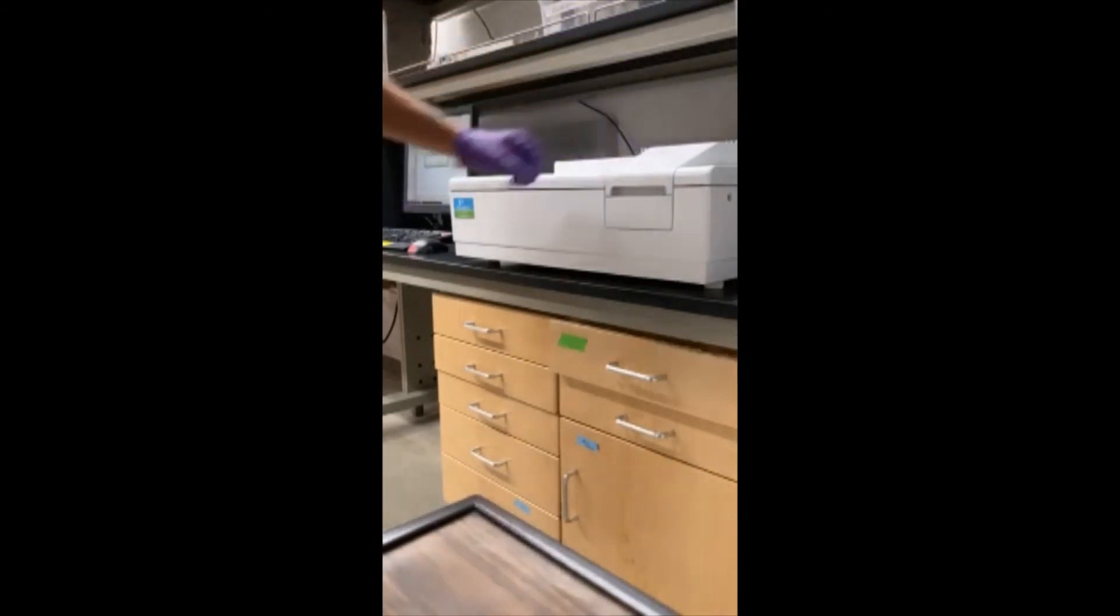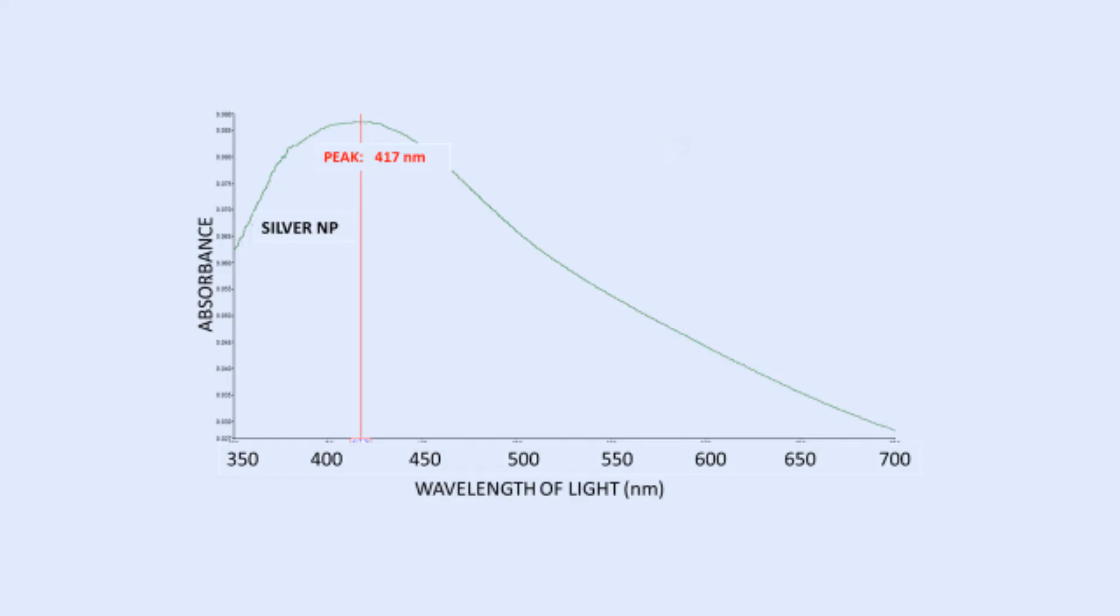In this example we are looking at the amount of light that is absorbed as a function of the wavelength. We can see that there is a high absorbance in the region of the 400 nanometer wavelength.